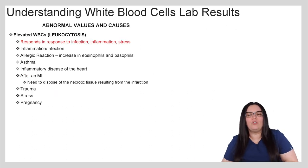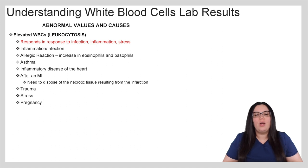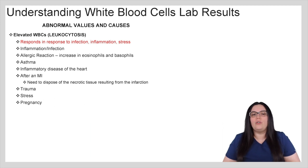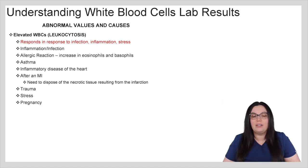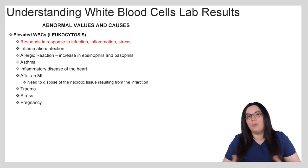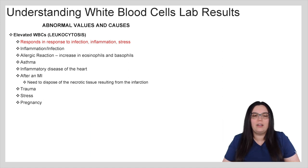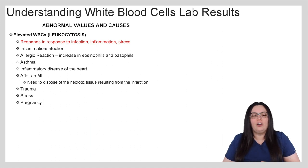If we have abnormal values, what are the potential causes? Leukocytosis, also known as elevated white blood cells, tells us there is some kind of infection, inflammation, or stress taking place inside the body. An allergic reaction can cause an increase in eosinophils and basophils. Other causes include asthma, inflammatory disease of the heart, and after a myocardial infarction — white blood cell counts increase due to the need to dispose of the necrotic tissue resulting from that infarction. You can also see elevated counts in trauma, stress, and pregnancy.